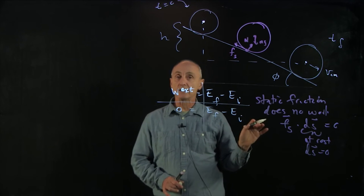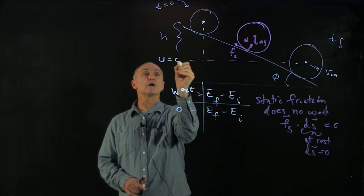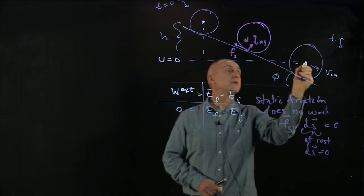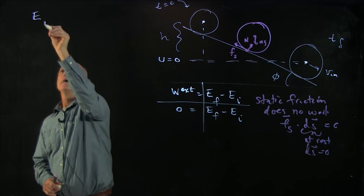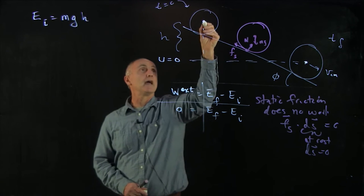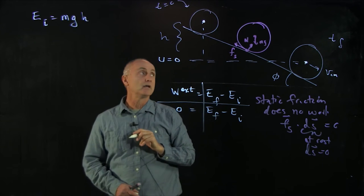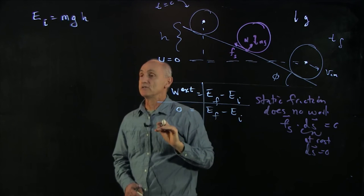Now, how do we analyze our energy? Well, I've set things up so I'm going to choose my potential energy to be 0 when it's at the bottom, and our initial energy is only equal to potential energy. If the wheel has a mass m, gravitational force down, the potential energy initially is mgh.